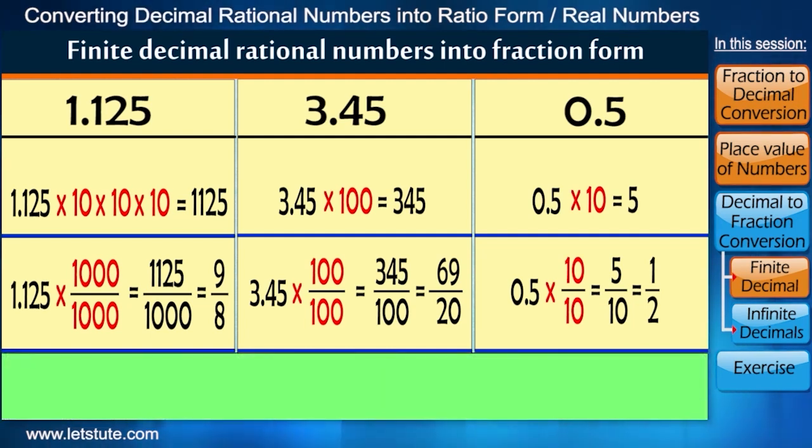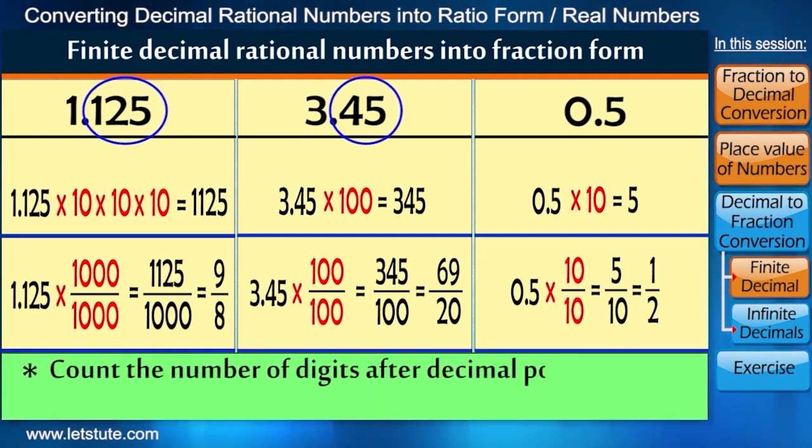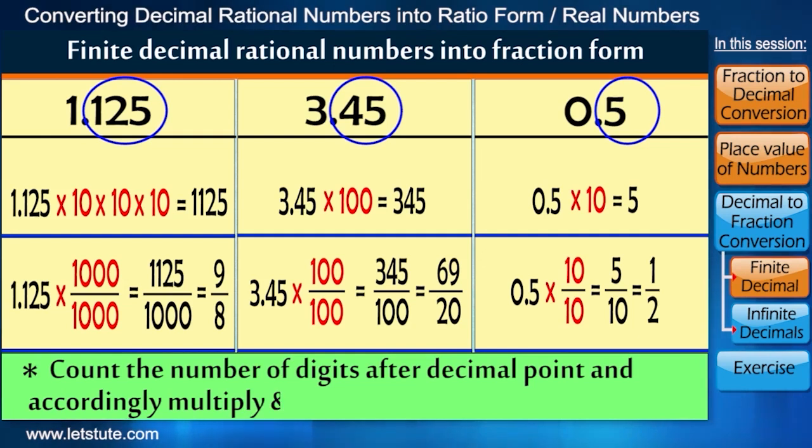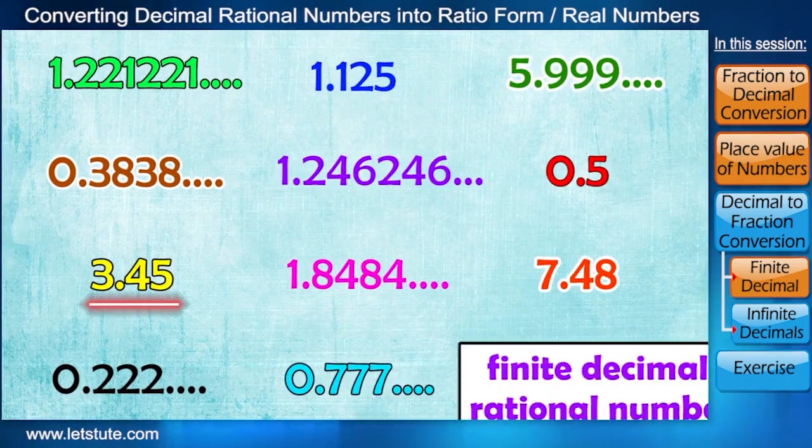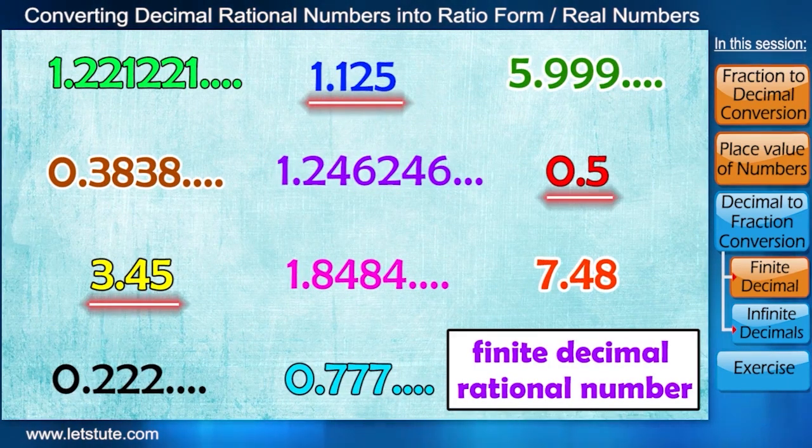Please understand that we have to just count the number of digits after decimal point and accordingly multiply with 10s or multiples of 10s. So till now, we have learned to write finite decimal rational numbers into fraction form.